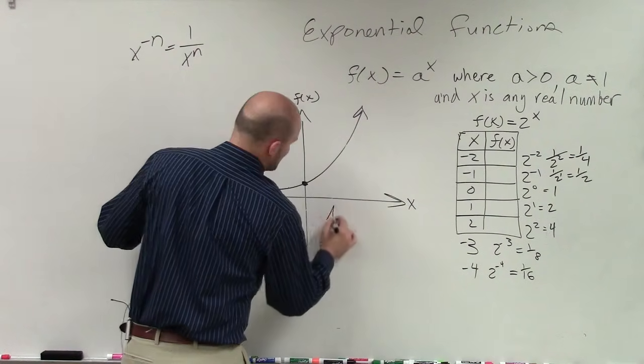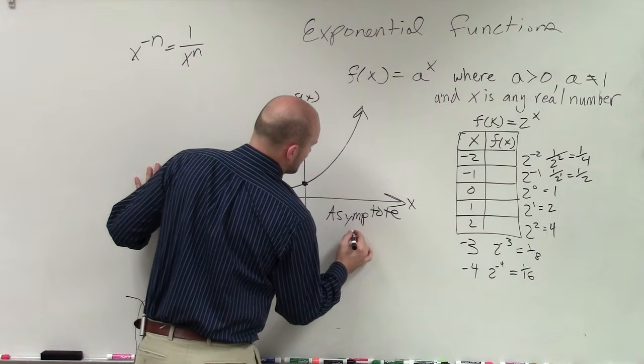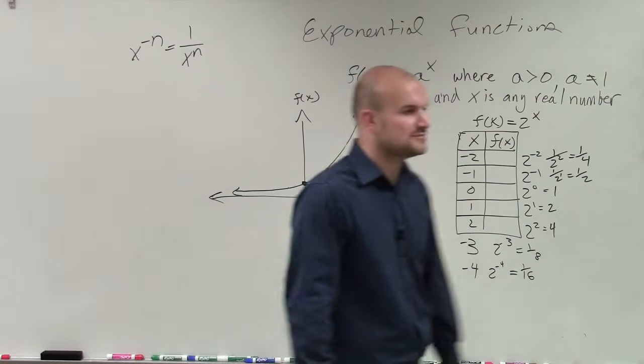Therefore, when we're talking about that, we can say that the asymptote is y = 0. So you guys are going to want to make sure you write that down. Your asymptote is y = 0.